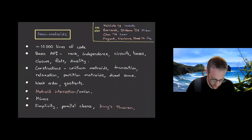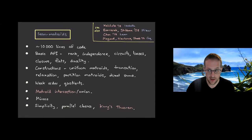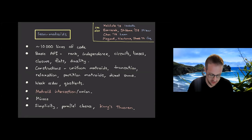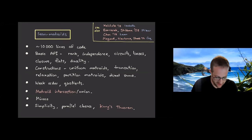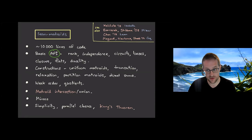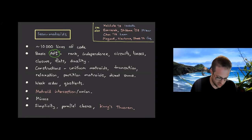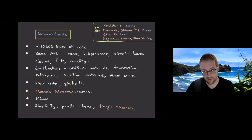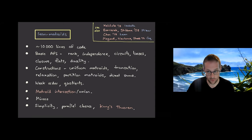The project I'm talking about is what we call Lean Matroids — myself, Ed Lee, and Matúš Tendijak. We've been working on it for a few months. It's around 10,000 lines of code and contains a lot of the basic bread and butter of matroid theory. The API — essentially a library of lemmas, definitions, and theorems — has basic lemmas about all the things you'd want: rank functions, independence, circuits, bases, closure, flats, and duality.